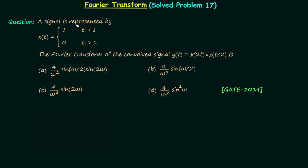A signal is represented by x(t), defined as follows: it is equal to 1 when |t| < 1, and it is equal to 0 when |t| > 1. We need to find the Fourier transform of signal y(t).